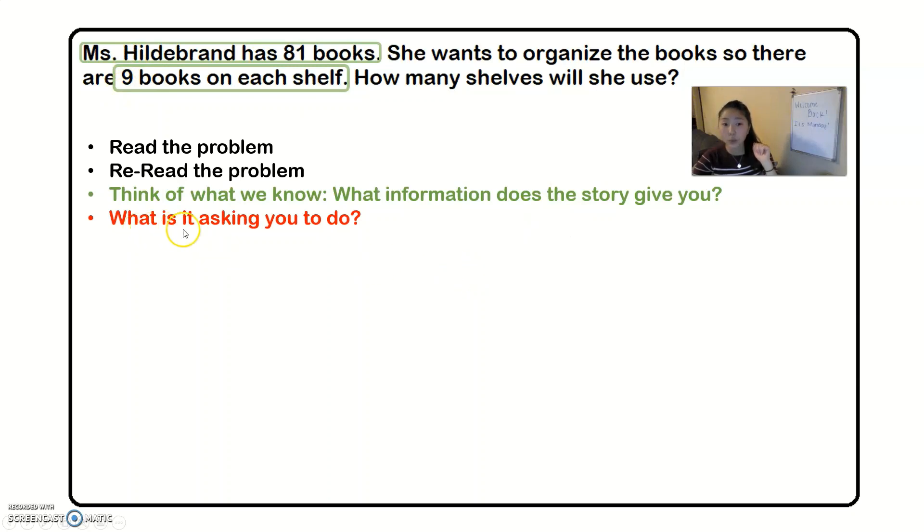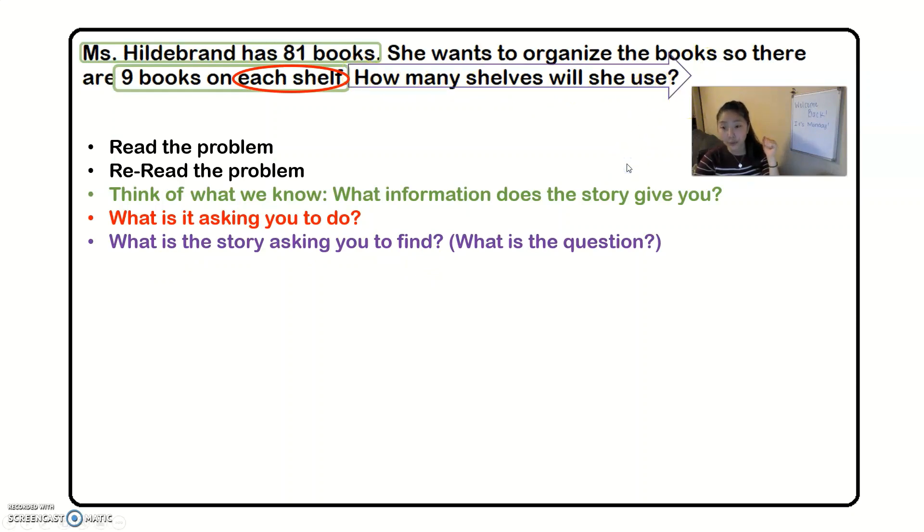Nine books on each shelf is what I thought was the most important in that sentence. I know that she wants to organize the books but that's not the most important thing. It's that in each shelf you need nine books. Think about on each shelf just like the picture I showed you in the beginning with the shelves. On each of those there needs to be nine books. And what is the question asking you to find? How many shelves will she use is our question.